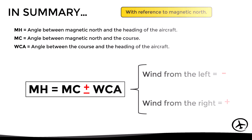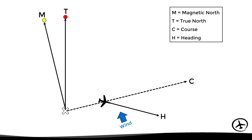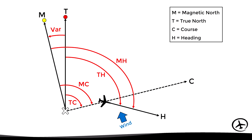Let's summarize all the concepts related to courses and headings seen so far. We have the true course — the angle between true north and the course; the magnetic course — the angle between magnetic north and the course; the magnetic variation — the angle between true and magnetic north; the true heading — the angle between true north and the heading; the magnetic heading — the angle between magnetic north and the heading; and the wind correction angle — the angle between the desired course and the heading.